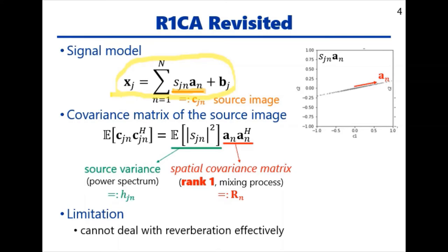So, the covariance matrix of the source image becomes a rank-1 matrix as shown here. The green part is a variance of the source signal modeling its power spectrum, which we denote by H. The red part is a rank-1 matrix called a spatial covariance matrix modeling the mixing process, which we denote by R.